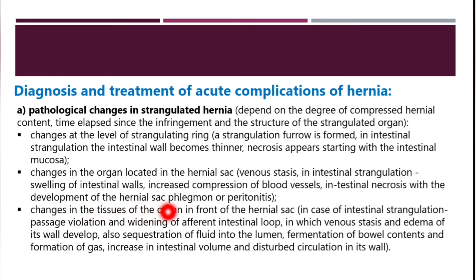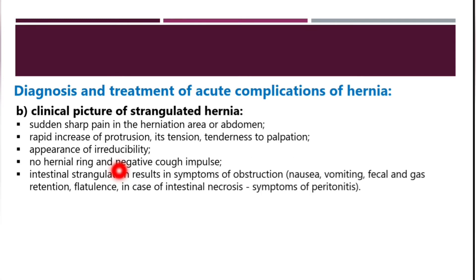Changes in the tissues of the organ in front of the hernia sac in intestinal strangulation include passage violation and widening of the afferent intestinal loop, with stasis and edema of its walls, sequestration of fluid into the lumen, fermentation of bowel contents, formation of gas, increase in intestinal volume, and disturbed circulation. The clinical picture includes sudden sharp pain in the herniation area or abdomen, rapid increase of protrusion size and tenderness to palpation, appearance of irreducibility, no defined hernia ring, and negative cough impulse.